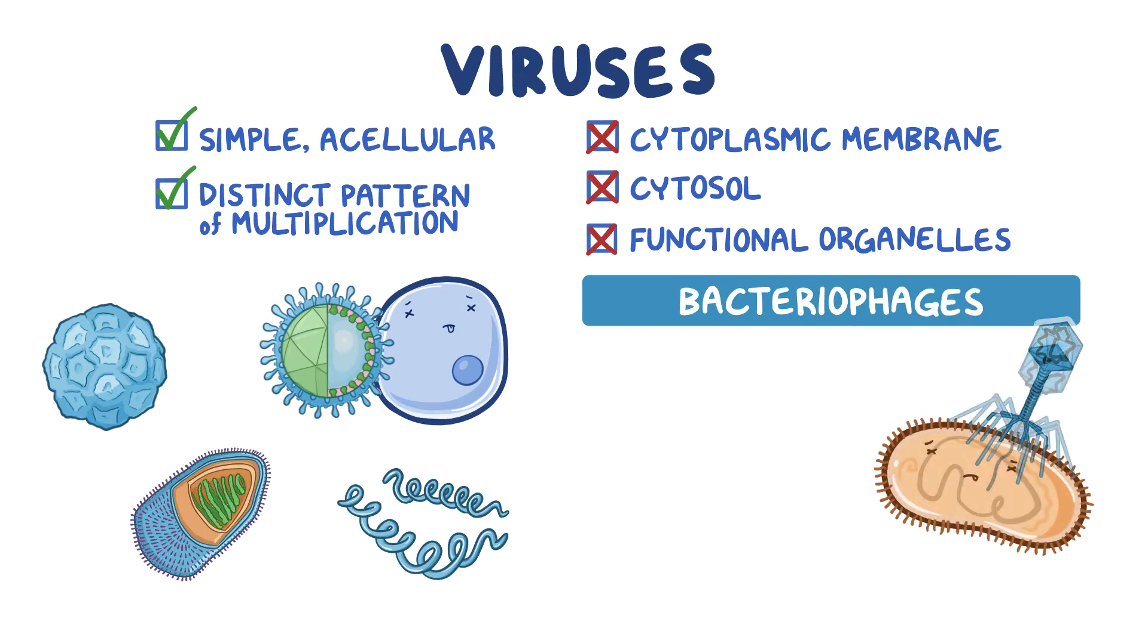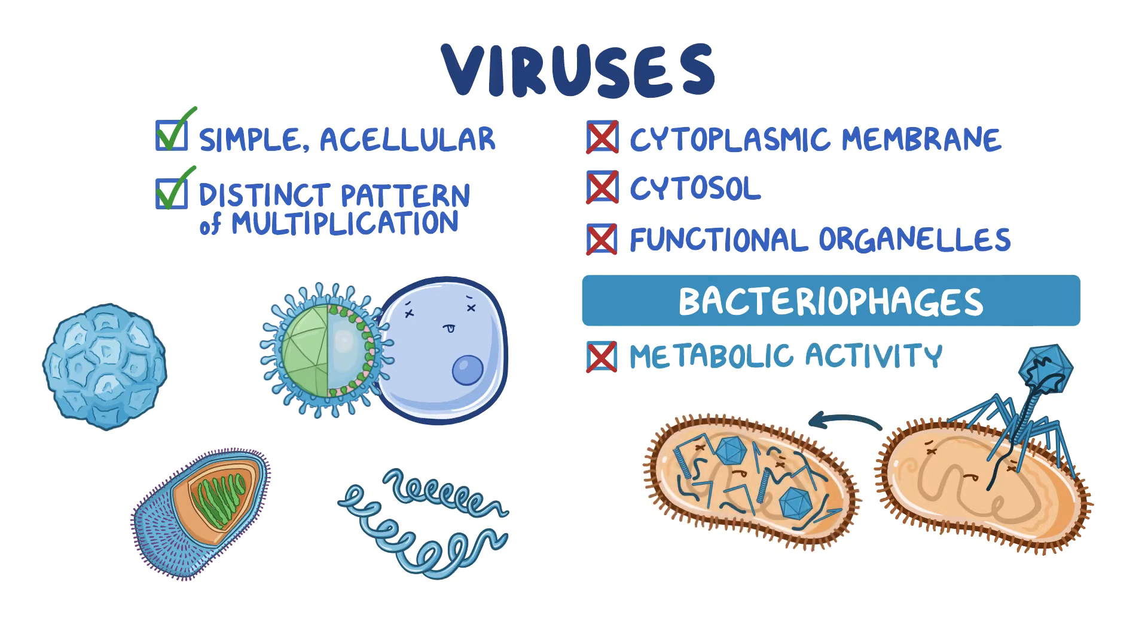Viruses and bacteriophages are not capable of metabolic activity on their own. So instead, they invade other cells and use their metabolic machinery to produce more viral molecules, nucleic acid, and proteins, which then assemble into new viruses.